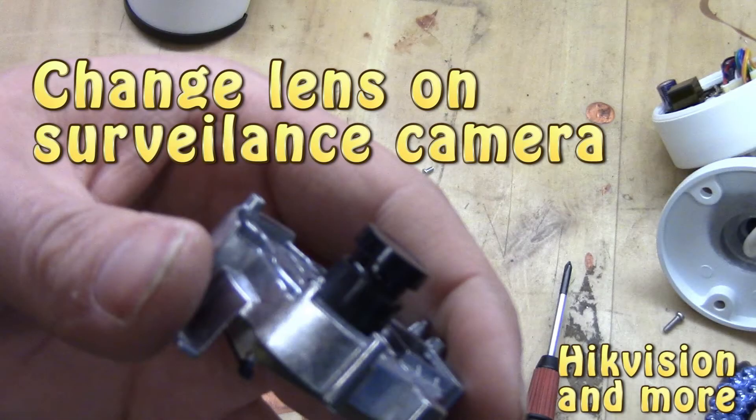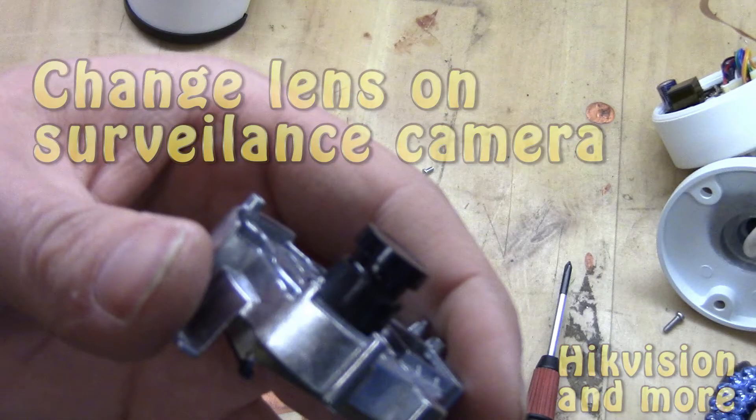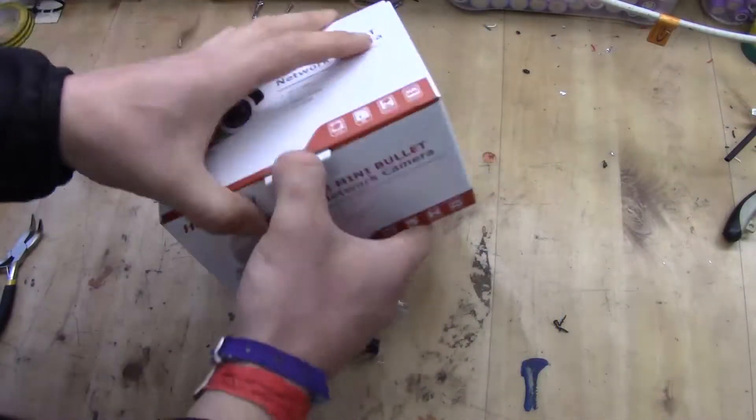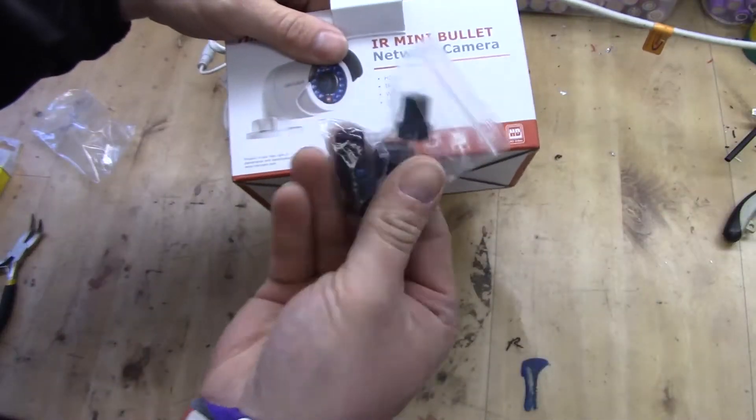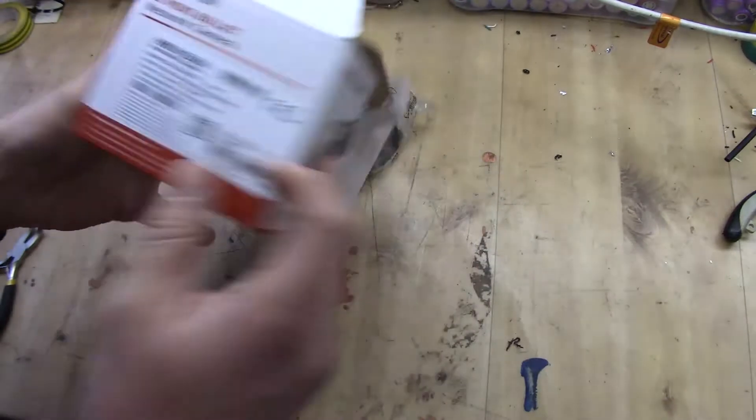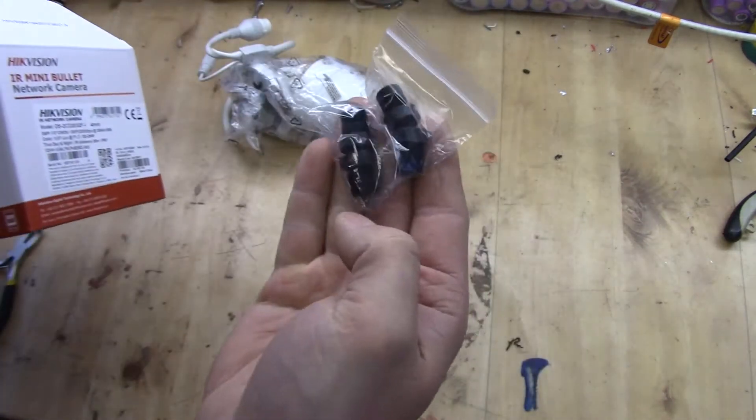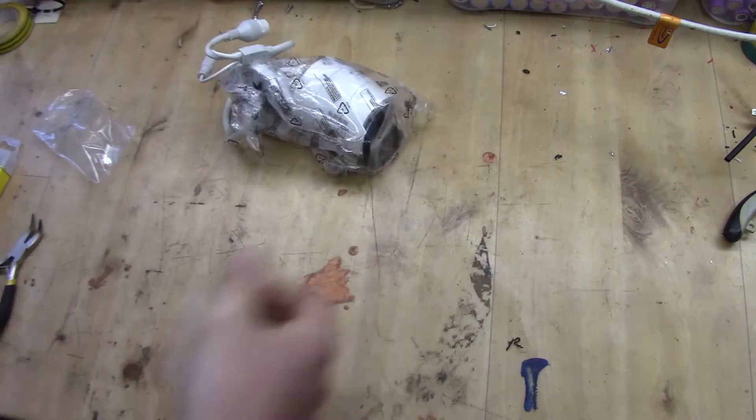Welcome back guys. Today in this video we will take a look at how you can change a lens from 4mm, as I have in this case on this camera, to a 2.8mm lens. This is good to be able to do if you want a wider field of view, and that's what I am out for.